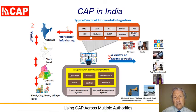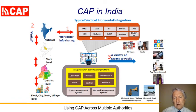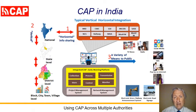Here's India's CAP-based integrated disaster early warning platform used by disaster management authorities. Aggregation proceeds from the village and city level through the district and state levels and up to the national level. All mobile network operators as well as All India Radio are integrated. Support for English, Hindi, Malayalam, and Tamil allows 65 percent of the population to get alerts in their regional language.